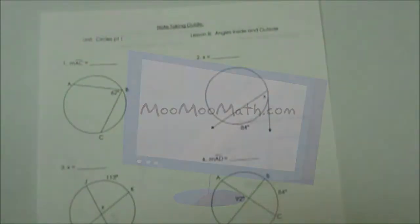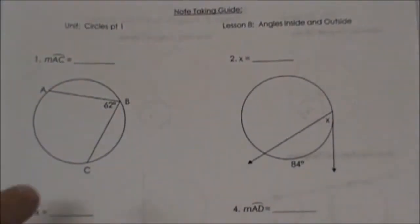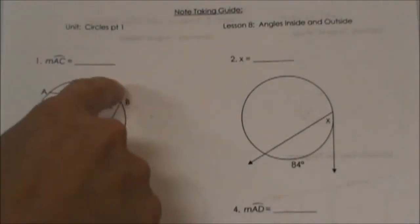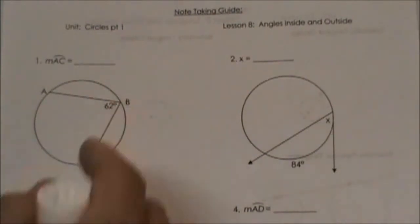This is your note taking guide. Let's look at this first one. Where is the vertex? The vertex is on the circle. This is an inscribed angle.